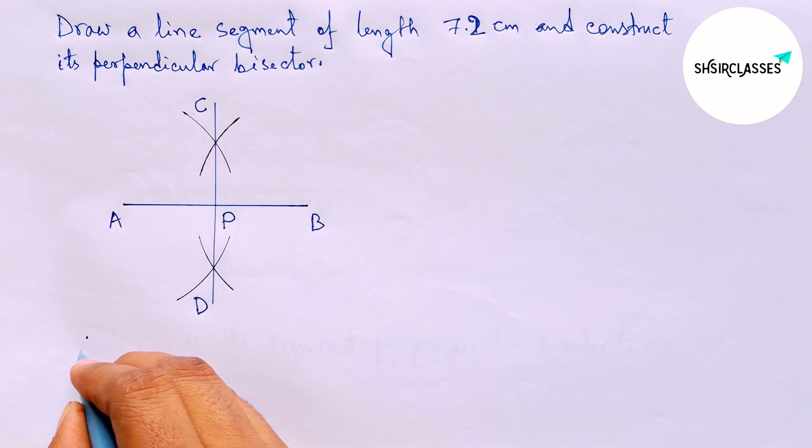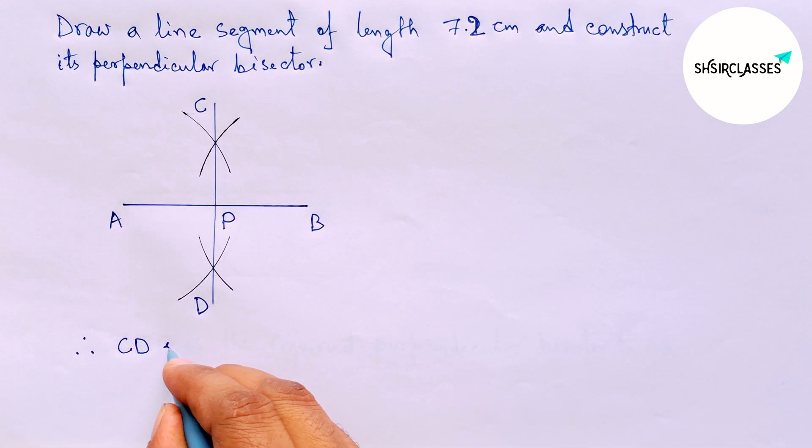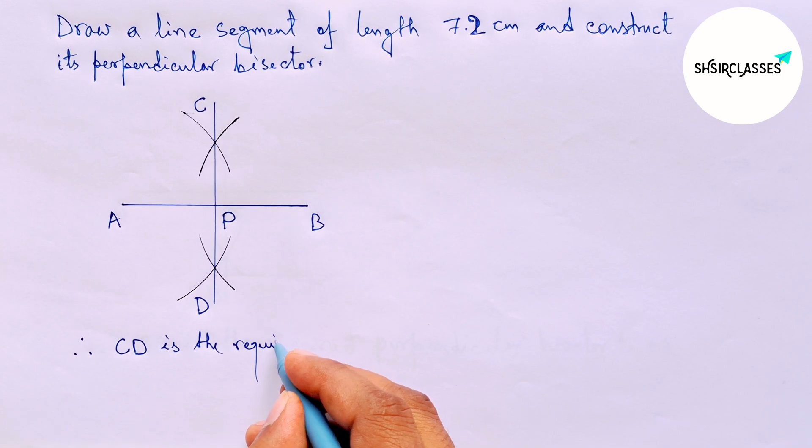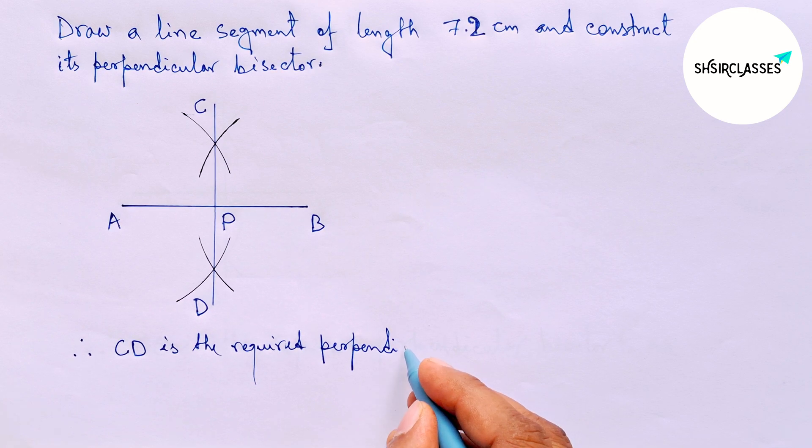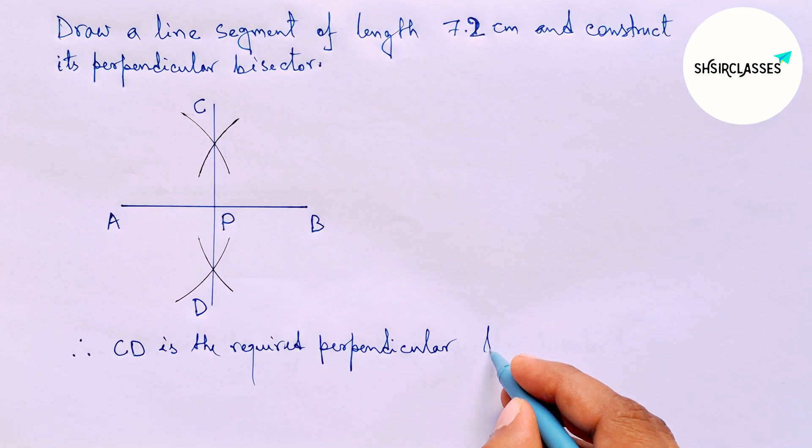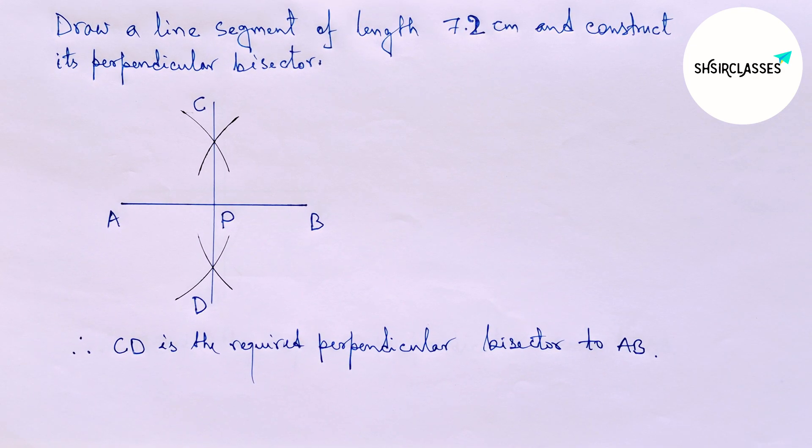Therefore, CD is the required perpendicular bisector to the given line AB of 7.2 centimeters. By this way, you can construct a perpendicular bisector in an easy way. That's all, thanks for watching. Please share it.